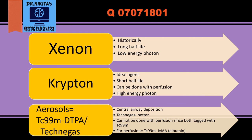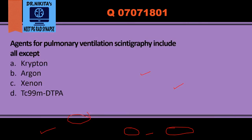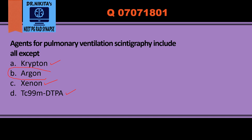Important points to remember: krypton is the ideal agent and ventilation-perfusion can be done simultaneously with it. The aerosols used are technetium-99m DTPA or techni-gas (carbon particles). For perfusion, we use technetium-99m MAA. Coming back to the question — krypton is used (ideal agent), xenon has been used (historical agent), and technetium-99m DTPA aerosol has been used. Argon is the agent that is NOT used in ventilation scintigraphy.